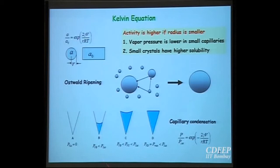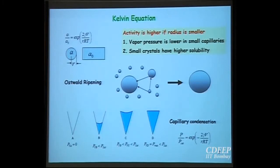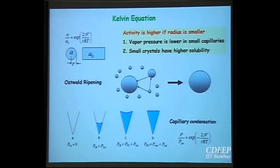If you see crystals floating in water with a size distribution, small crystals have higher solubility and dissolve, while large crystals grow, until eventually you get a single crystal. Whenever you have a suspension of soluble solids in a liquid with a size distribution, they start growing and the suspension becomes unstable. This is Ostwald ripening, caused by the higher activity of small-radius particles. Another consequence is condensation in capillaries — in a conical pore exposed to vapor, condensation starts in the smallest-radius region first, and this property is used to find out pore size distribution using nitrogen gas and the Kelvin equation.